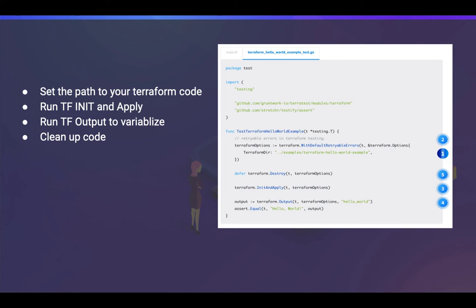On the right side there's a pretty basic Hello World example. The first step is to define the directory where your Terraform files are. The second part is where you define the init and apply — so it initializes and applies or plans to understand the output. You then define the output as a variable, specify which parameters to pick from it, and finally there's an assert statement that checks if the statement is true or not. At the end it cleans up by running a Terraform destroy.